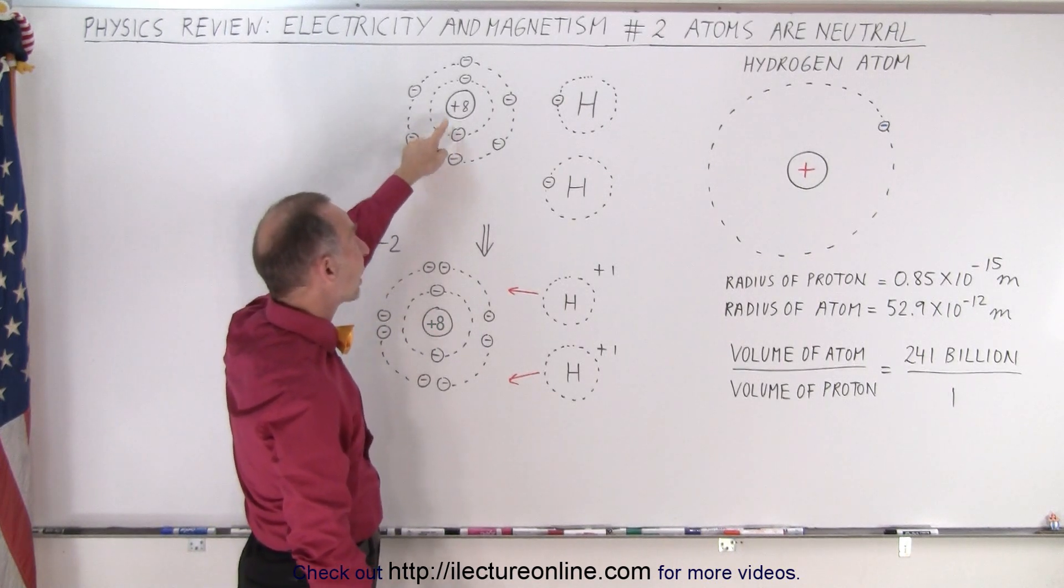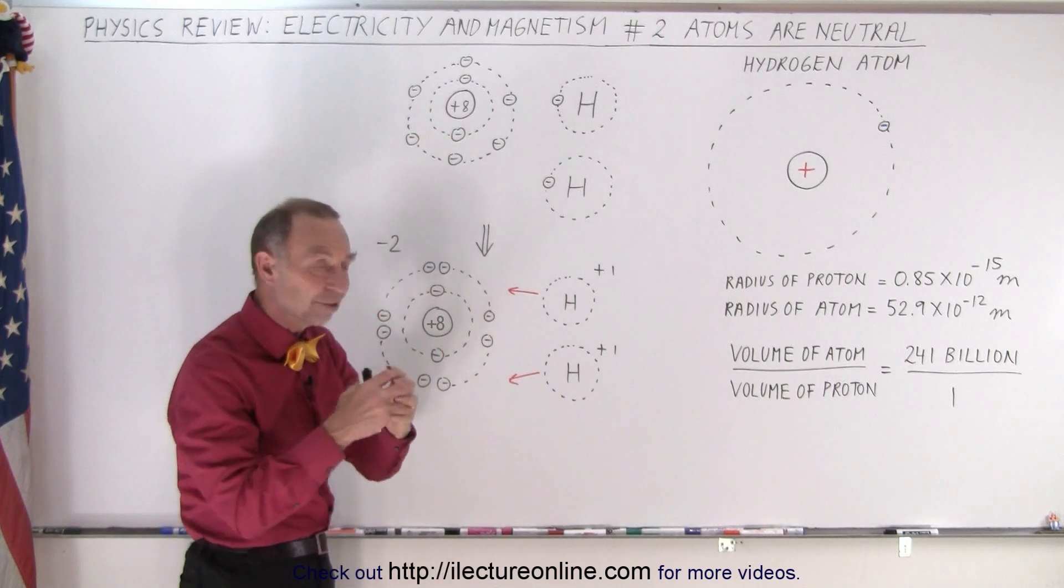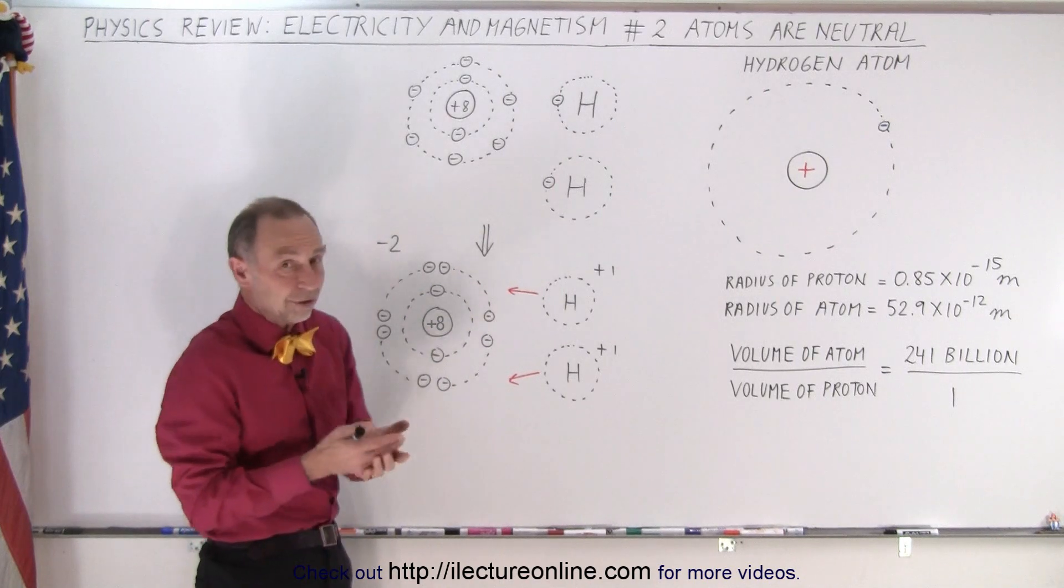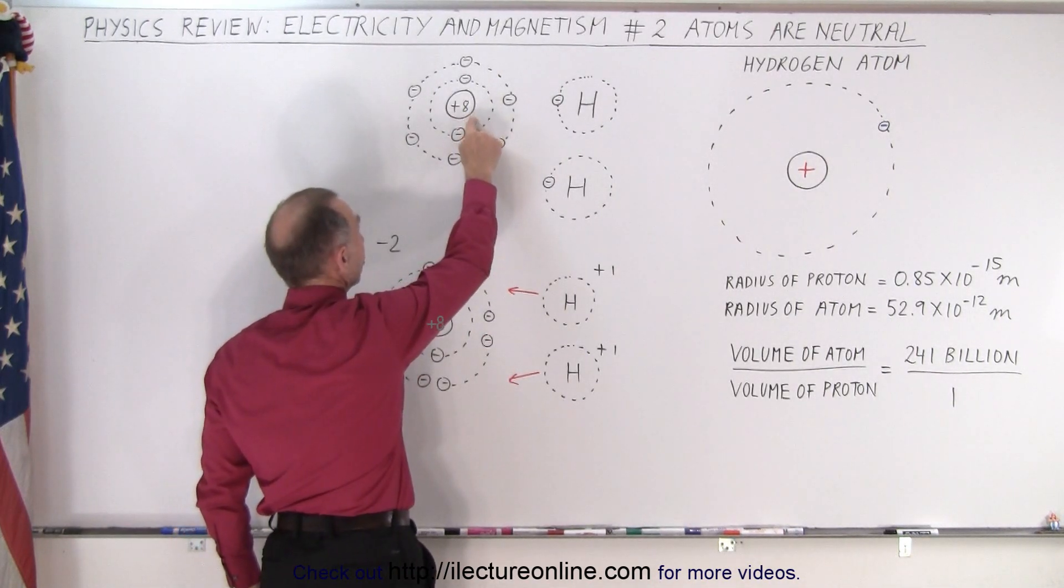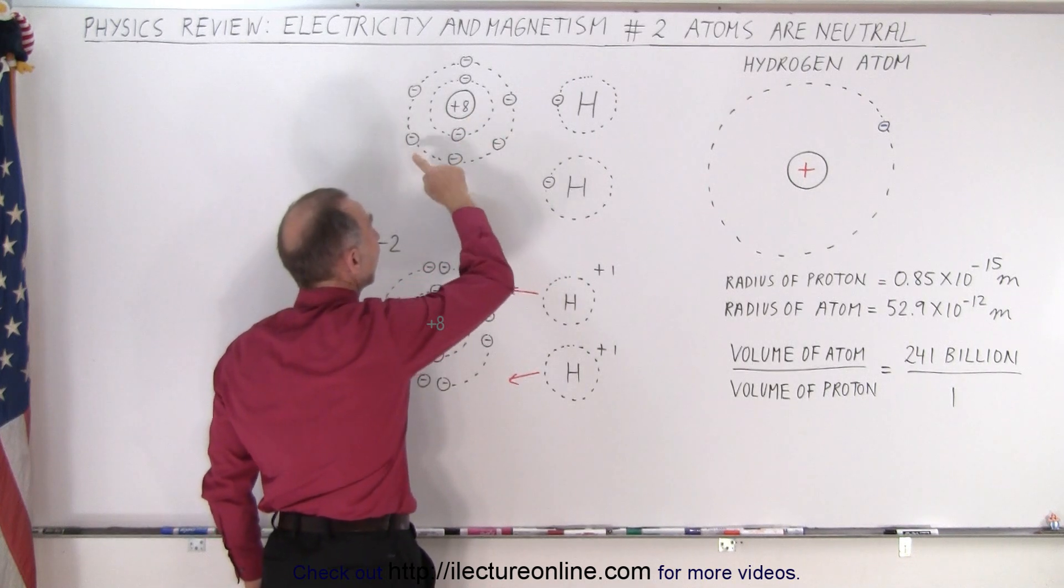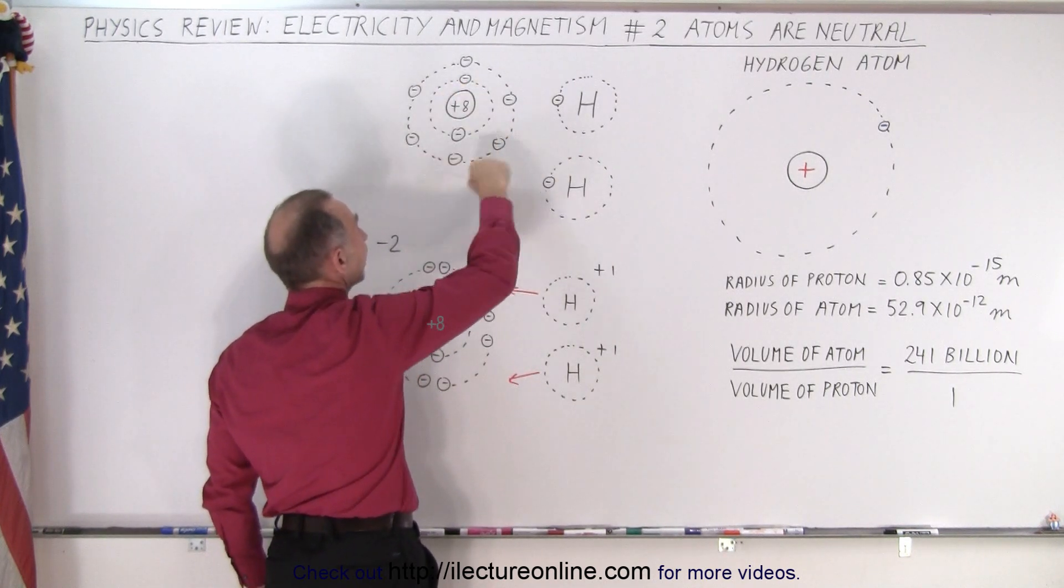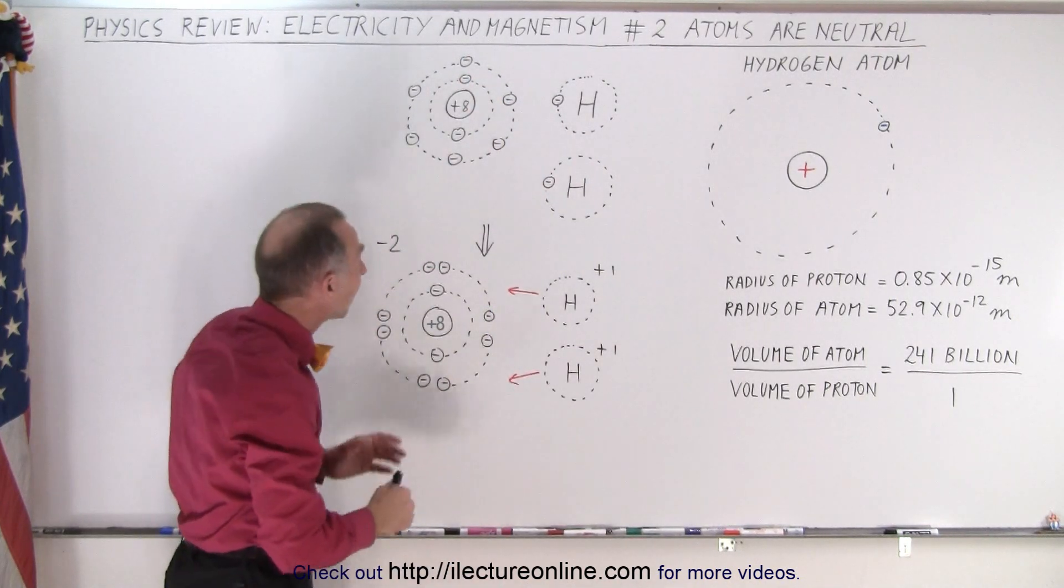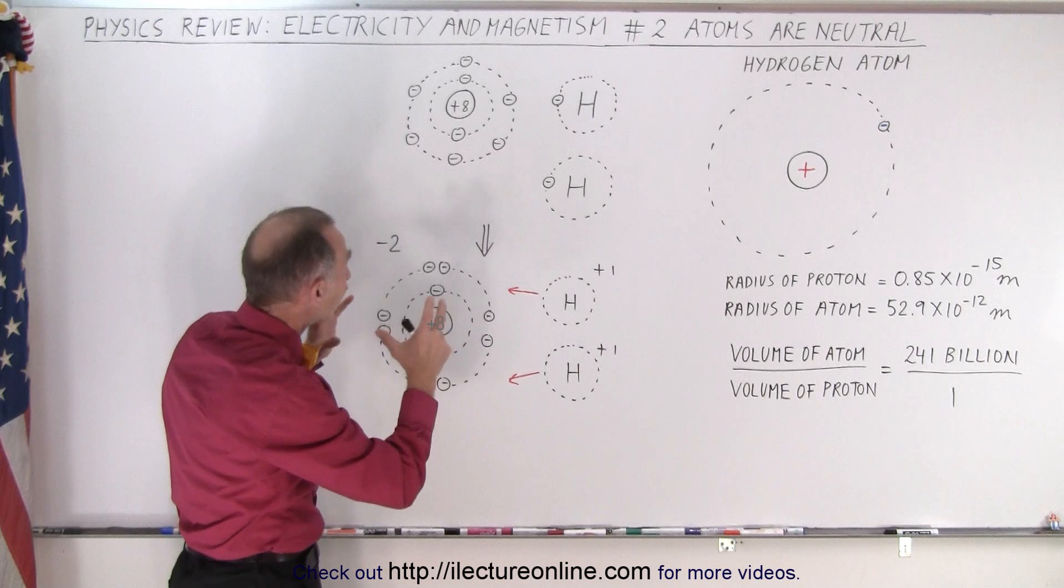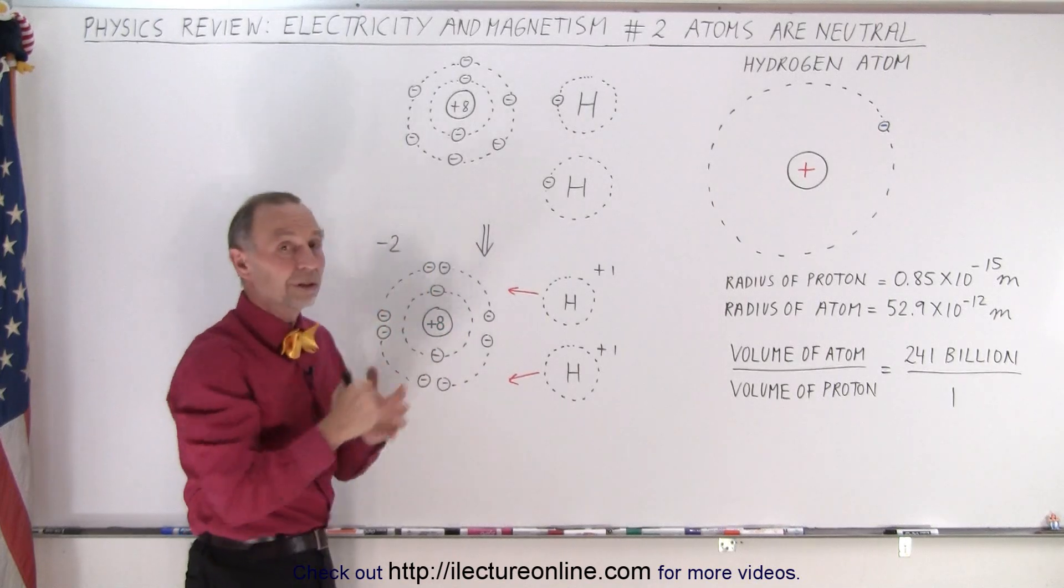it has eight protons and eight neutrons in the center, in the nucleus. Of course the neutrons don't have any charge, the eight protons do, so they carry a charge of eight positive charges, and then there's eight electrons, two in the inner orbit, six in the second orbit, or second energy levels we call it. And so therefore, an oxygen atom is also neutrally charged.